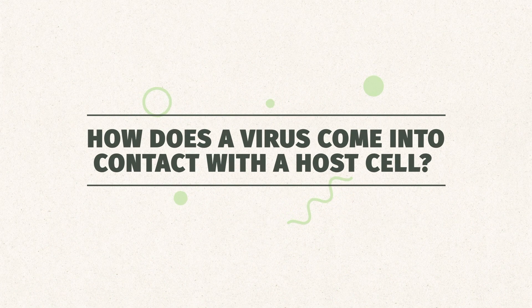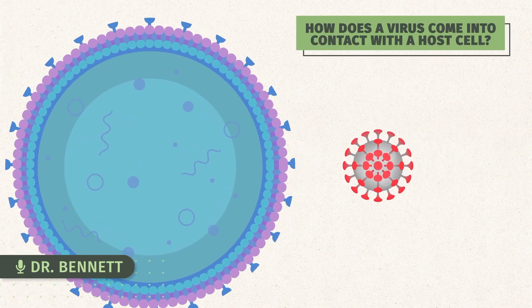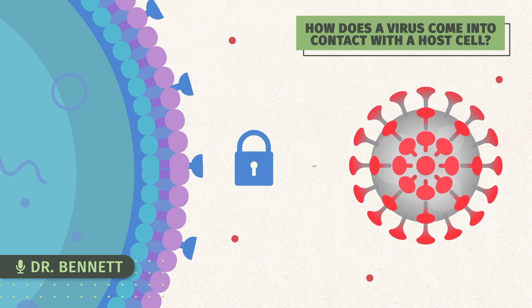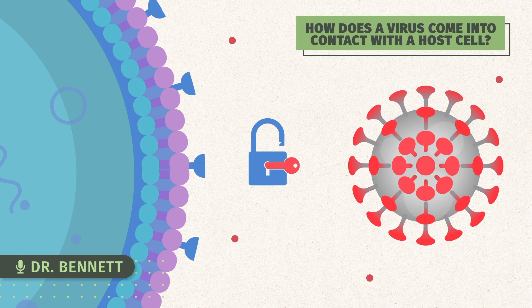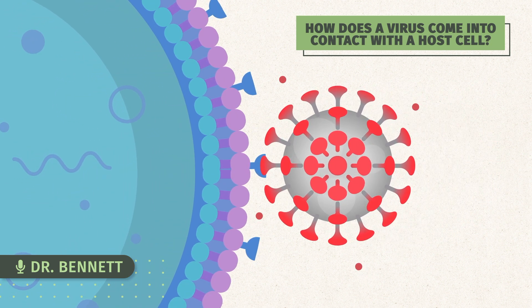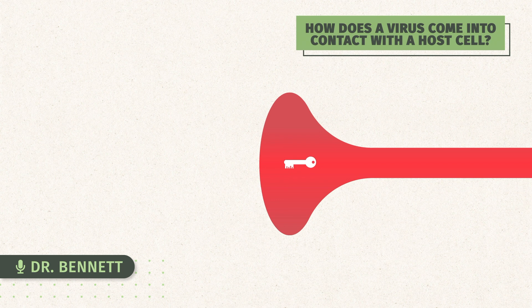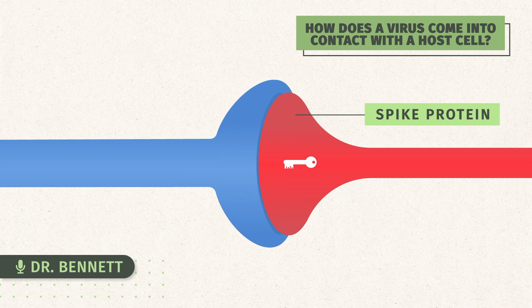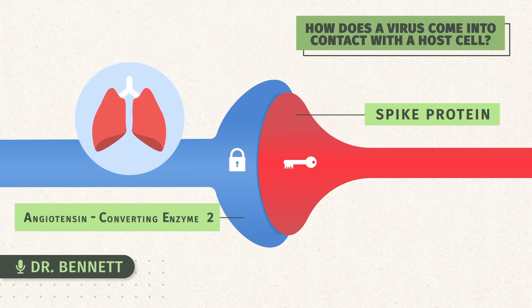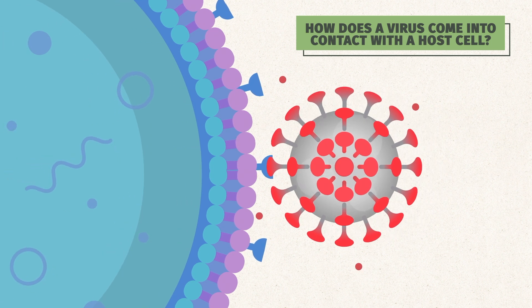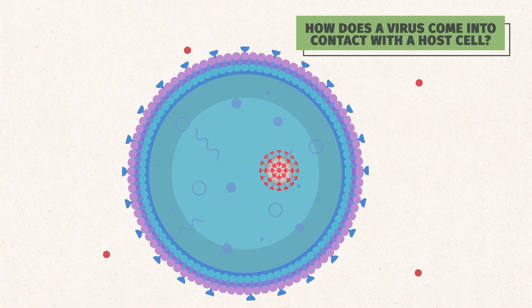How does a virus come into contact with a host cell? The host cell is covered with receptors, which are almost like a lock, and the virus protein is like a key. That bond between the key of the virus and the lock of the host cell is very specific and highly evolved to ensure the virus gets into only certain kinds of host cells. With this coronavirus, the key is called the spike protein, and it binds to the host cell receptor — the lock — specifically to host respiratory cells. The receptor is called ACE2. Once the virus makes that lock and key relationship with the host cell, it can enter and do its thing.